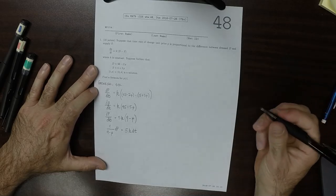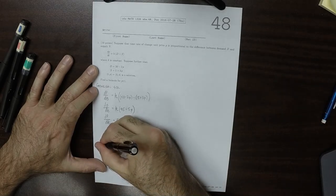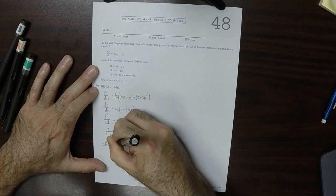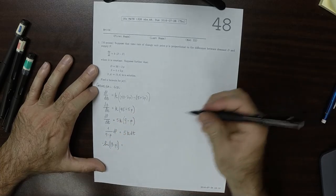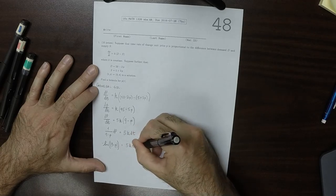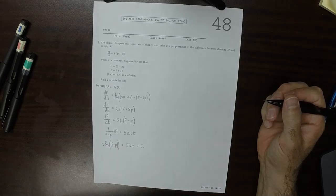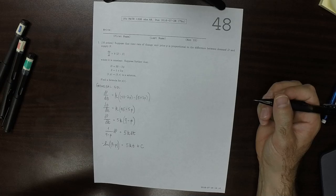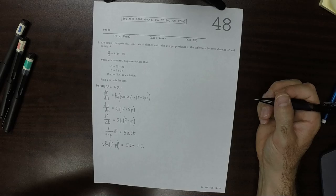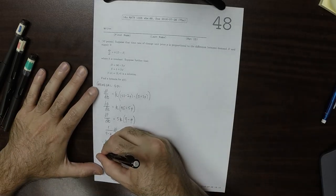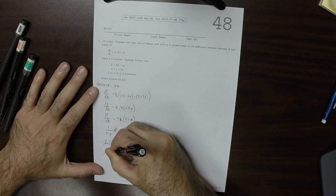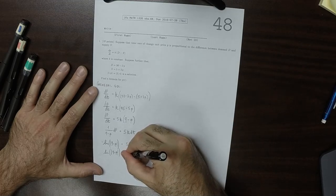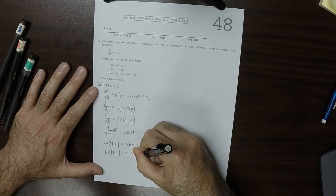The variables are separated, so we can anti-differentiate now. So then that would be negative log absolute value 9 minus p is 5kt plus an unknown constant. So we can say that this is log of absolute value 9 minus p is negative 5kt minus c.